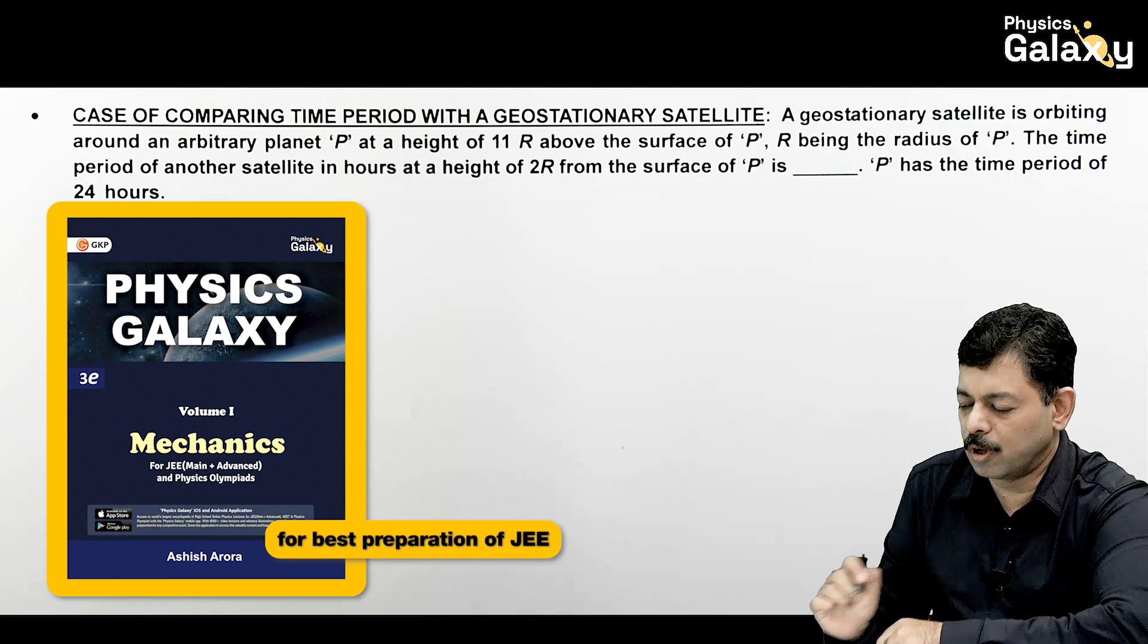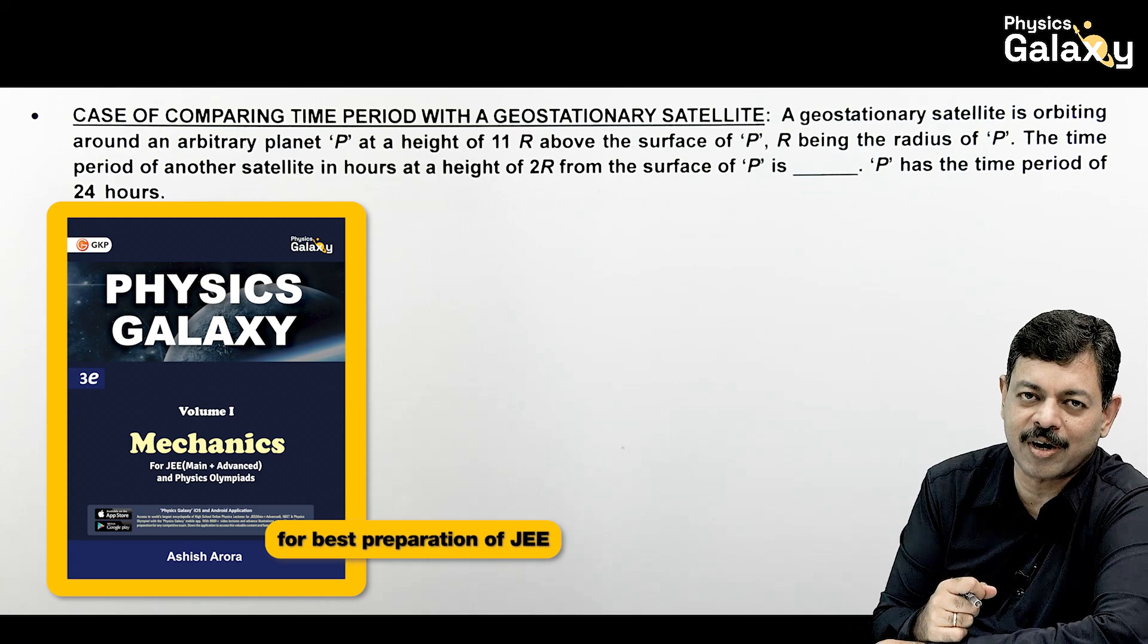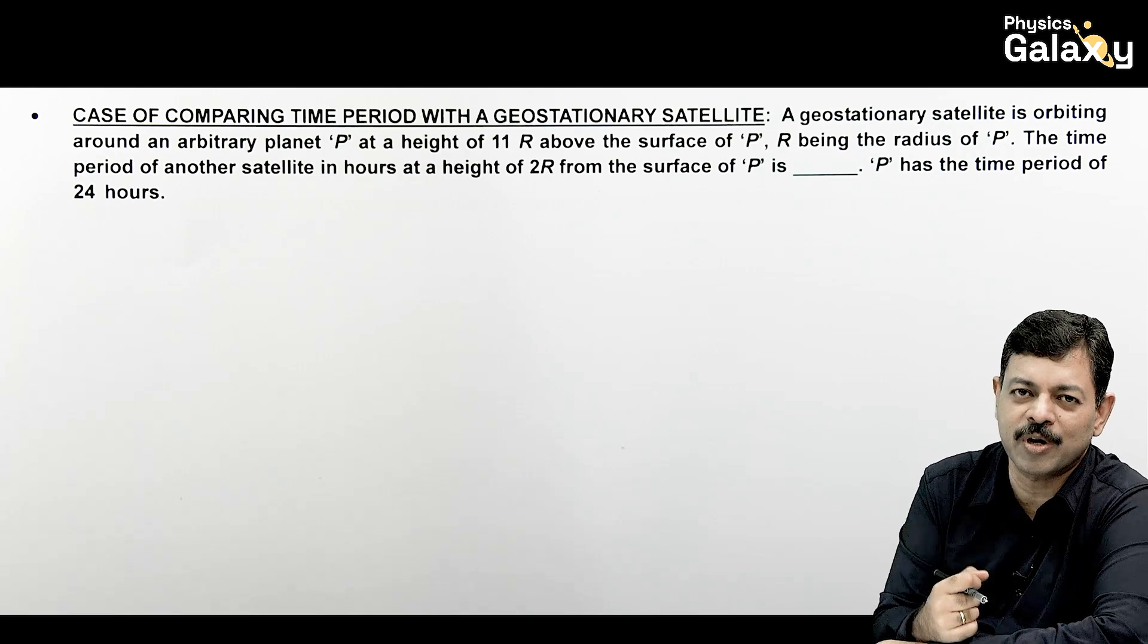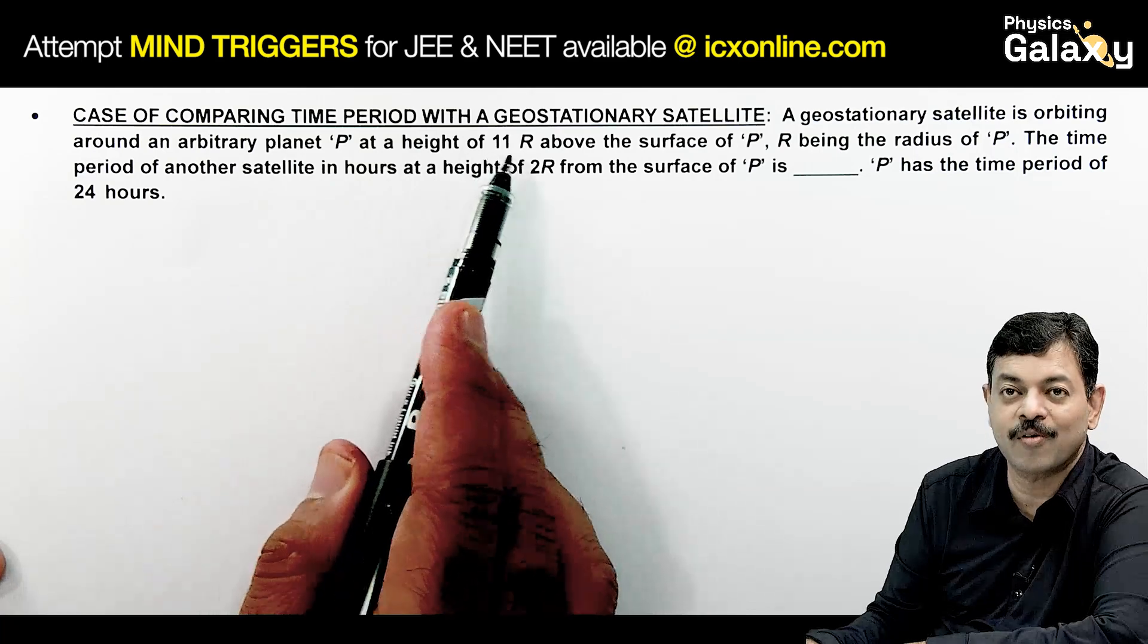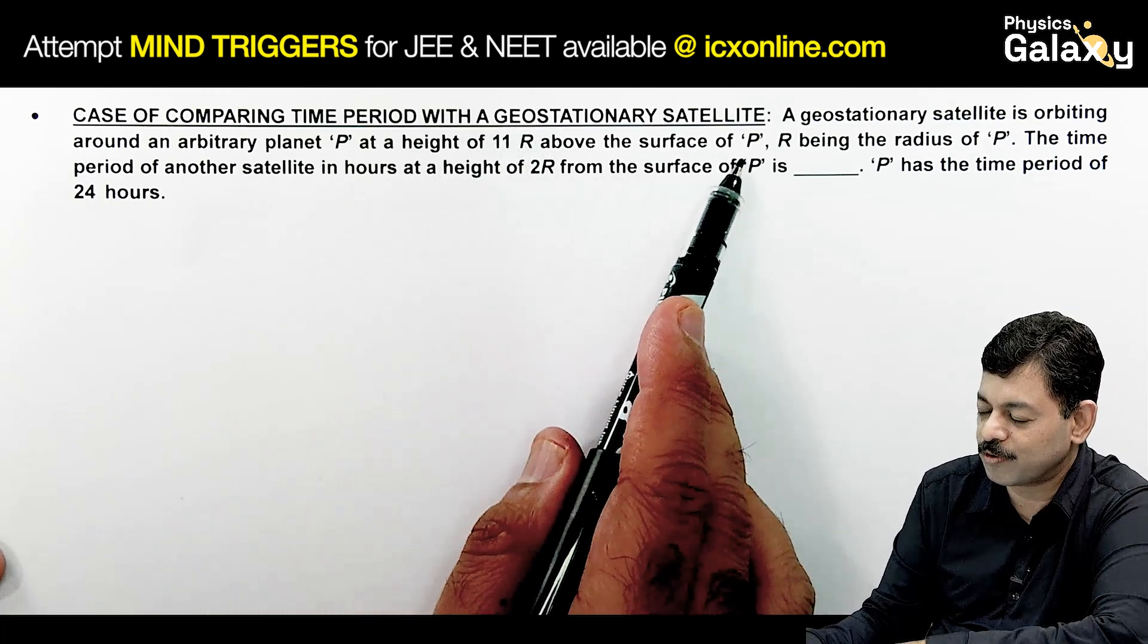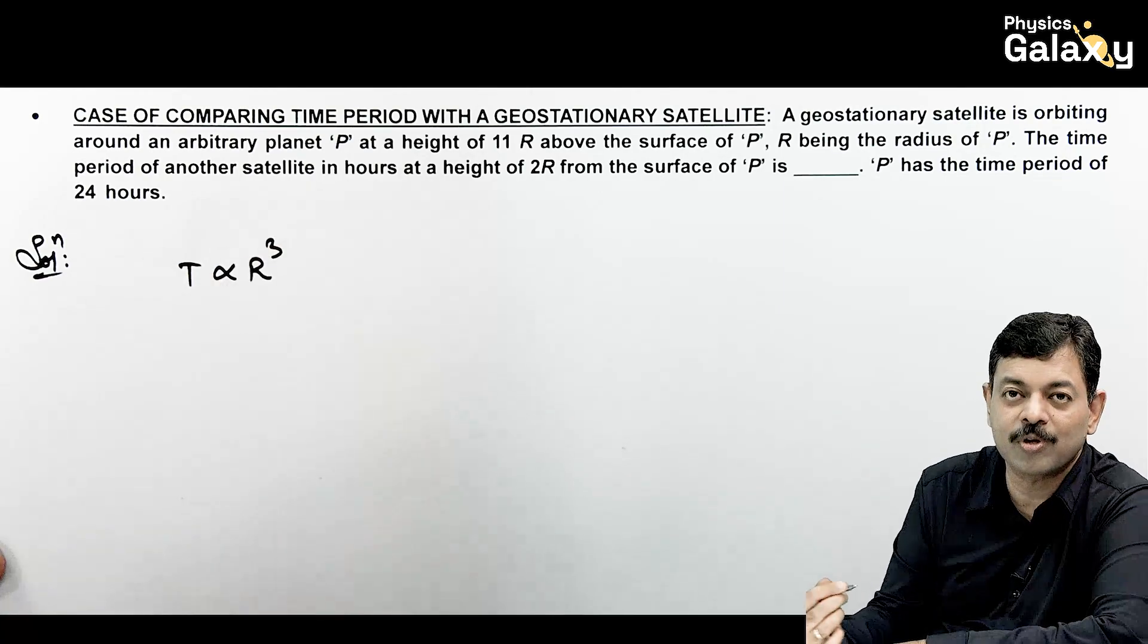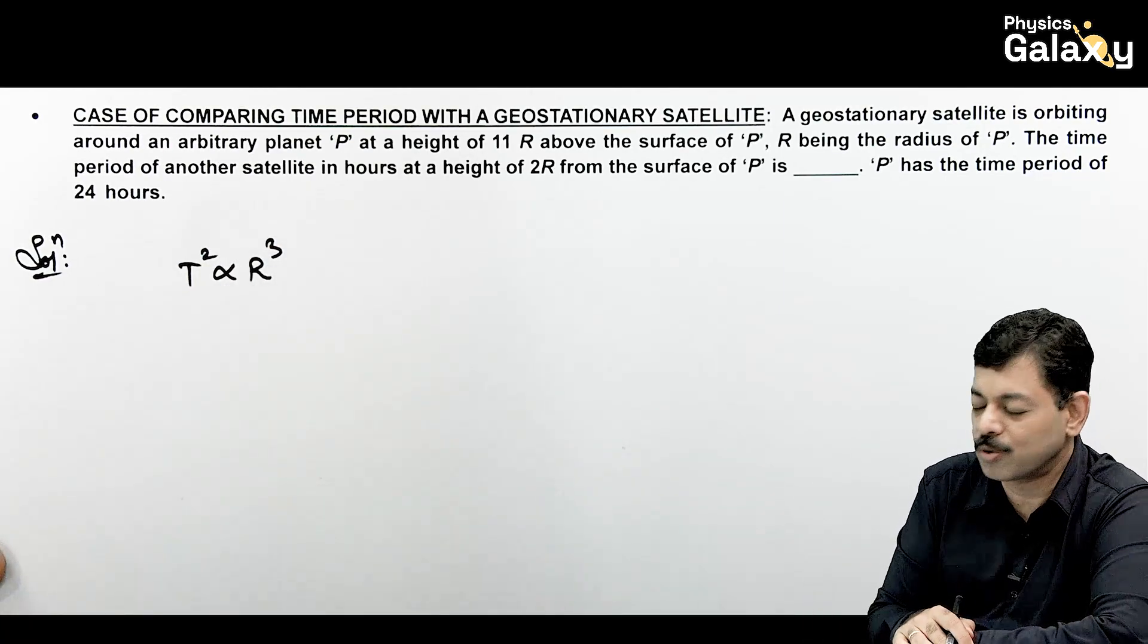Here we're talking about comparing time period with a geostationary satellite. A geostationary satellite is orbiting around planet P at a height of 11R, meaning the orbit radius is 12R above the surface. R is the radius of P. Use Kepler's law of periods: time period is proportional to r³, or T² ∝ R³.